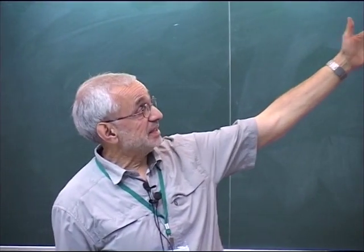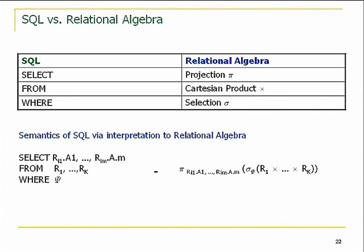This had direct influence on the design of SQL and the semantics of SQL. The main SQL construct is SELECT-FROM-WHERE: SELECT corresponds to projection, WHERE corresponds to selection, and FROM corresponds to the Cartesian product. So you express the projection of the selection of the Cartesian product in SQL by writing SELECT R1.A1, ..., Rm.Am FROM these relations WHERE this condition is satisfied. This is a direct influence of relational algebra on the design of SQL.